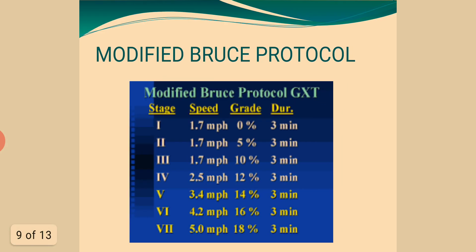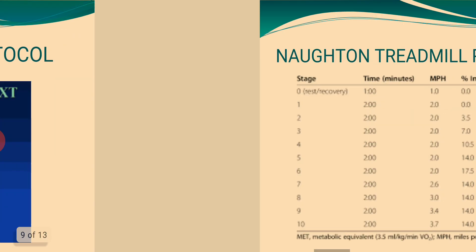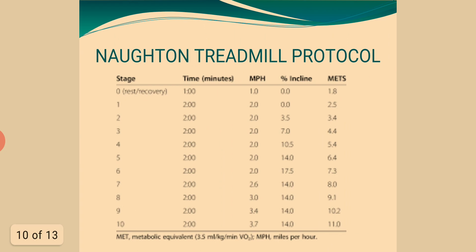Protocols: Modified Bruce Protocol — stages defined by speed, grade, and duration. Norton Treadmill Protocol — stages defined by time, speed in MPH, percentage of incline, and METs.